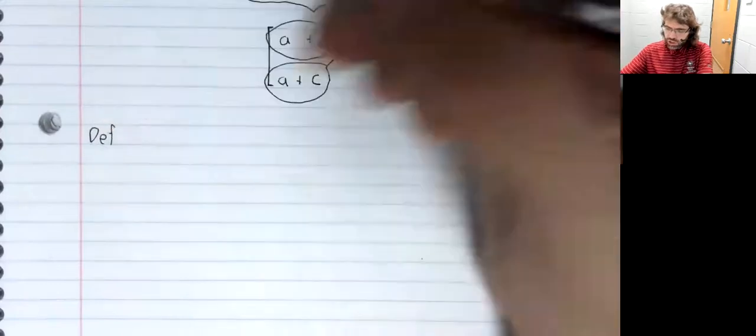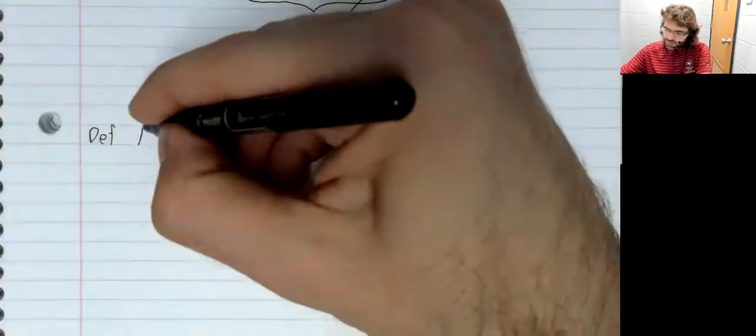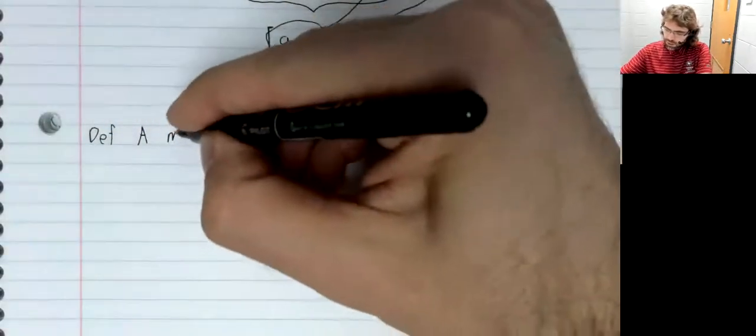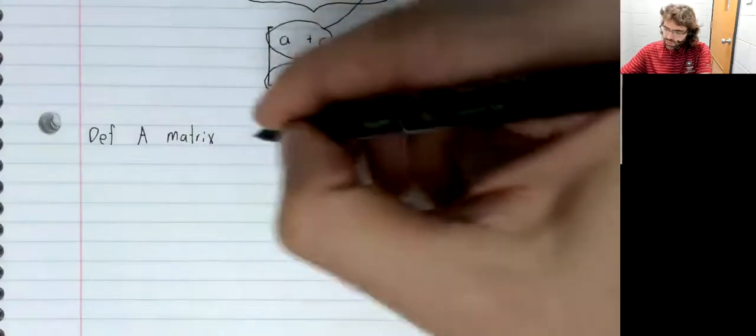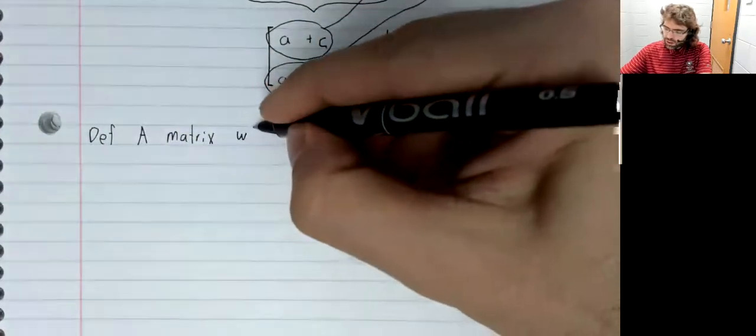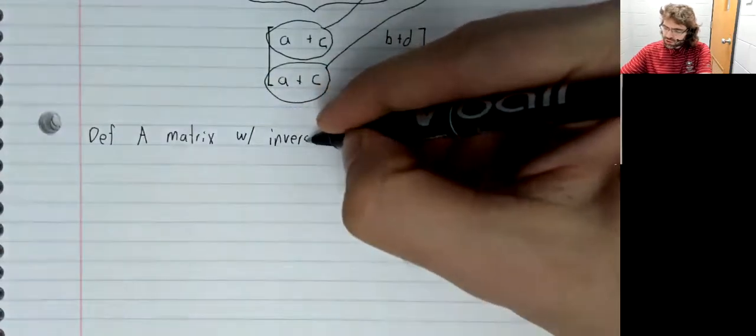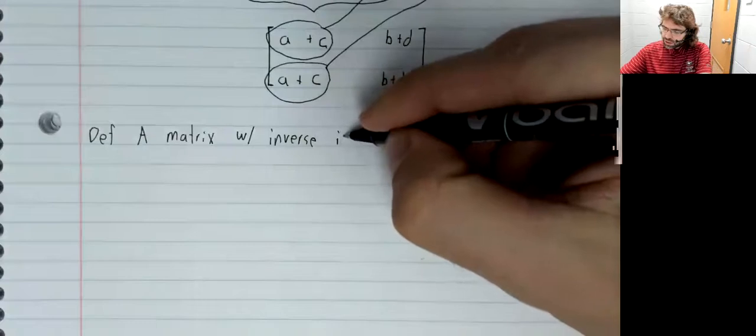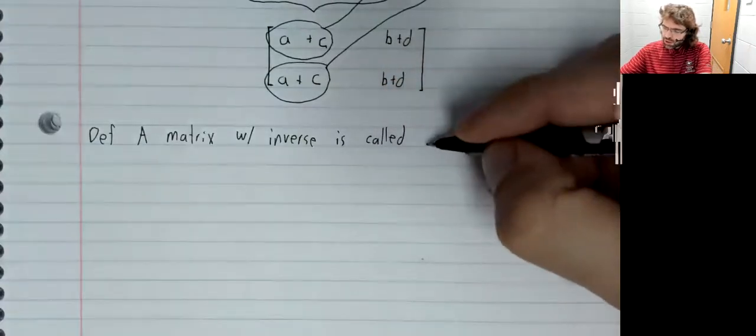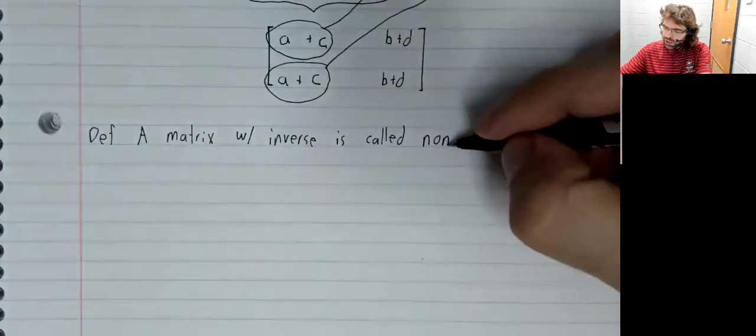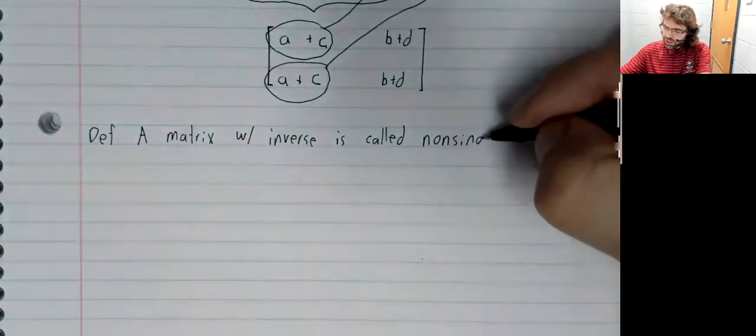Definition: A matrix with an inverse is called nonsingular.